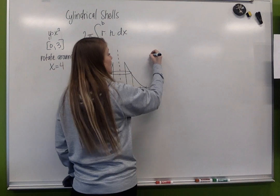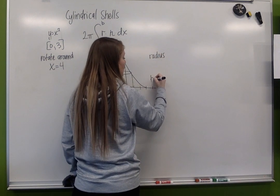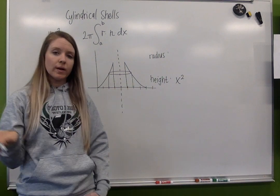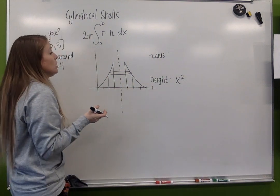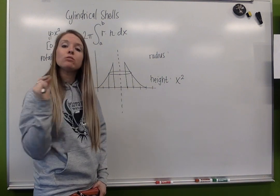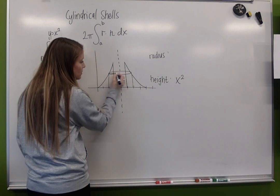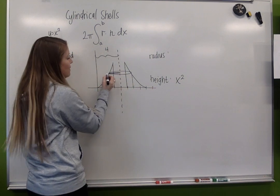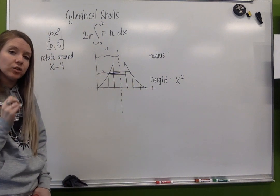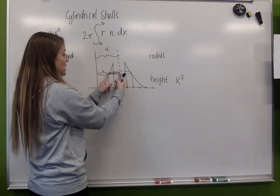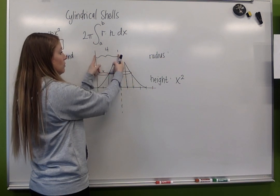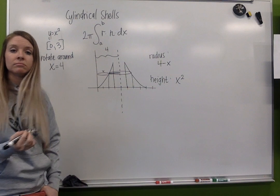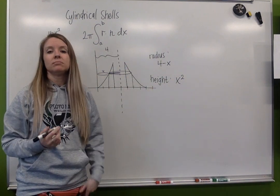Again, all I need to figure out is my radius and my height. We haven't changed the height. We're still using the function x squared. So our height is x squared. To find our radius. Based off of our line of rotation, my radius is here. This full distance is 4. And then we are going to be subtracting the x value we're using. 4 minus x gives me my radius. 4 minus x gives me that radius. So 4 minus x. I've got my radius. I've got my height. I'm ready to solve.